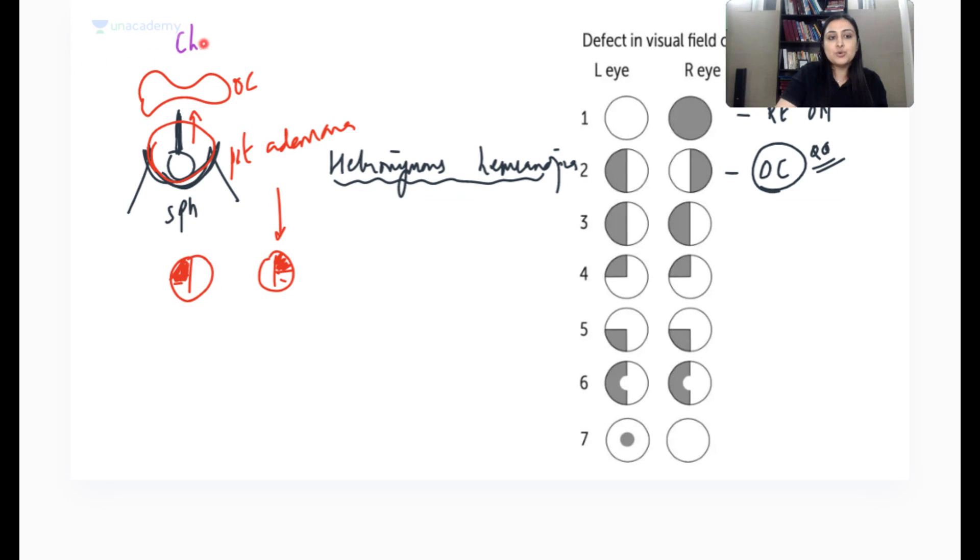On the other hand, if they give you that ek chota sa bachcha hai, there is a child who's having a suprasellar tumor which is showing me cystic changes, it is calcified, gross specimen showing me machine oil, is mein machine oil hai, there is wet keratin. Diagnosis is craniopharyngioma. Craniopharyngioma, all C's stick together. It is a suprasellar tumor. Upar se aa raha hai. It is going to press on optic chiasma from upar. Toh yahan pe kya milega? It is not pie on the floor.